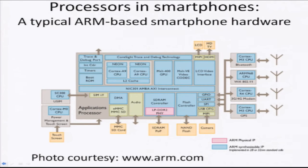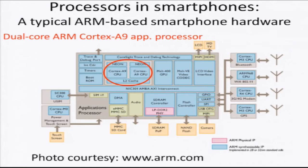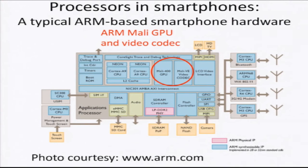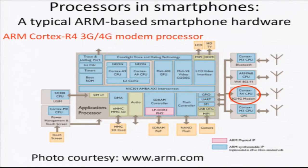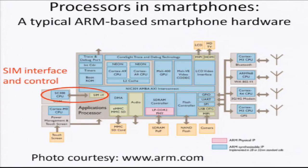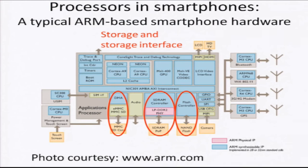Let us take a look at a typical ARM-based smartphone hardware. It has several components, so let us go through the important ones one by one. This particular example has a dual-core ARM Cortex A9 application processor — by dual core I mean there are two processors that can operate simultaneously in parallel handling multiple application requests. It has an ARM Mali graphics processor and a video codec for handling graphics-related requests. Storage has become very important for smartphones because they operate on complicated applications, so they need a large amount of storage.